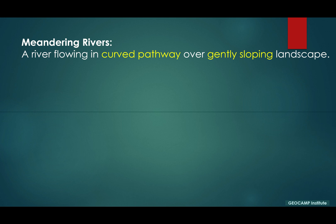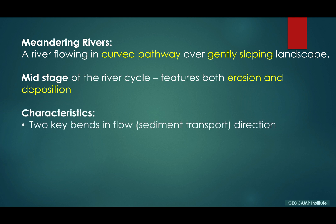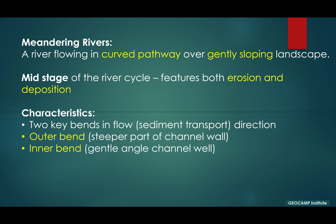A meandering river is a river flowing in a curved pathway over gently sloping landscape. They feature more in the mid-stage of a river cycle, and that's typically where you have erosion and deposition. In terms of characteristics, there are two key bends in the flow direction of meandering rivers: the outer bend and the inner bend. If you take a look at the profile through a meandering system, it's generally asymmetrical.